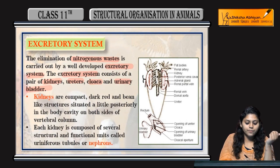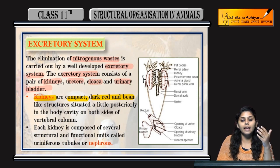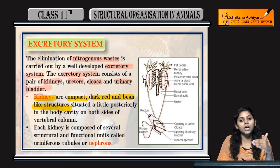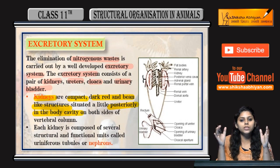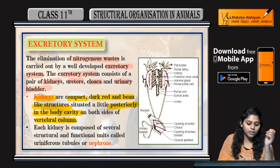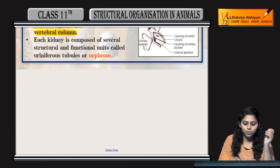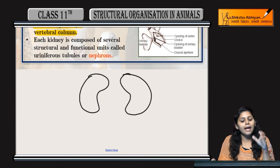Let's talk about kidney first. Kidney kaisa hoota hai? Compact structure hoota hai, dark red color ka hoota hai, and bean-like structure hoota hai. Kaha situated hoota hai? That is situated posteriorly in the body cavity on both sides of the vertebral column.